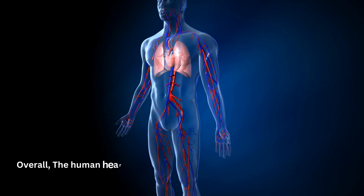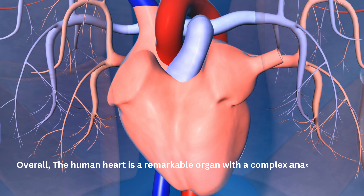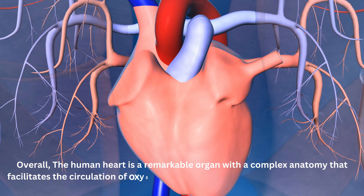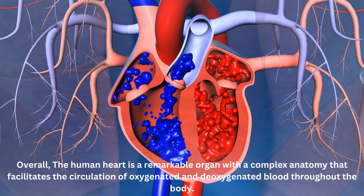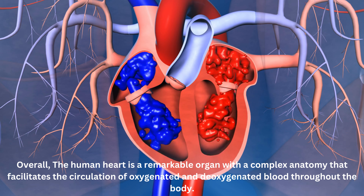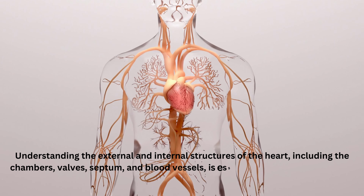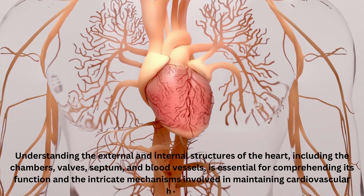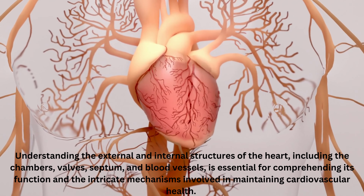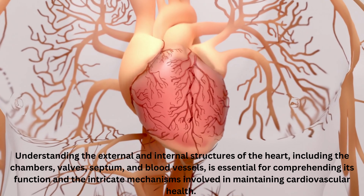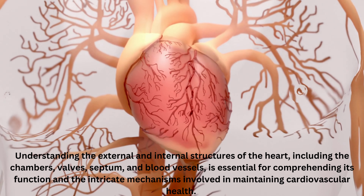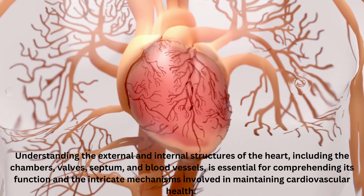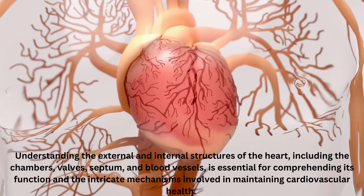Overall, the human heart is a remarkable organ with a complex anatomy that facilitates the circulation of oxygenated and deoxygenated blood throughout the body. Understanding the external and internal structures of the heart, including the chambers, valves, septum, and blood vessels, is essential for comprehending its function and the intricate mechanisms involved in maintaining cardiovascular health. Thank you for joining us on this educational adventure, and we hope you found it informative. See you in the next video.